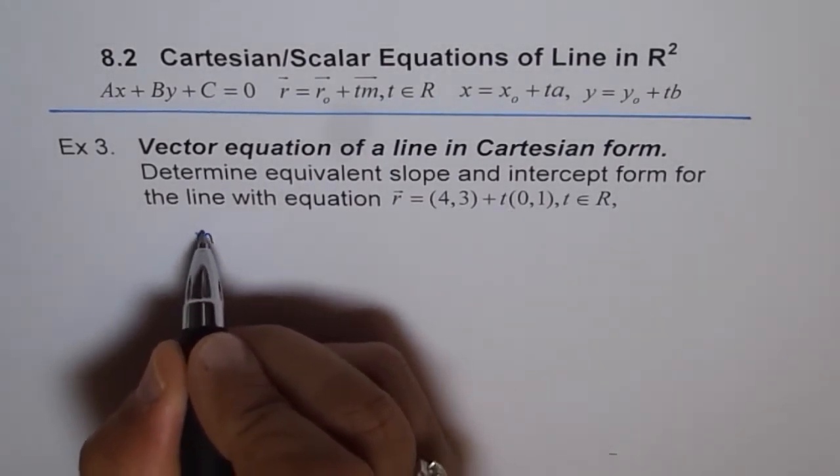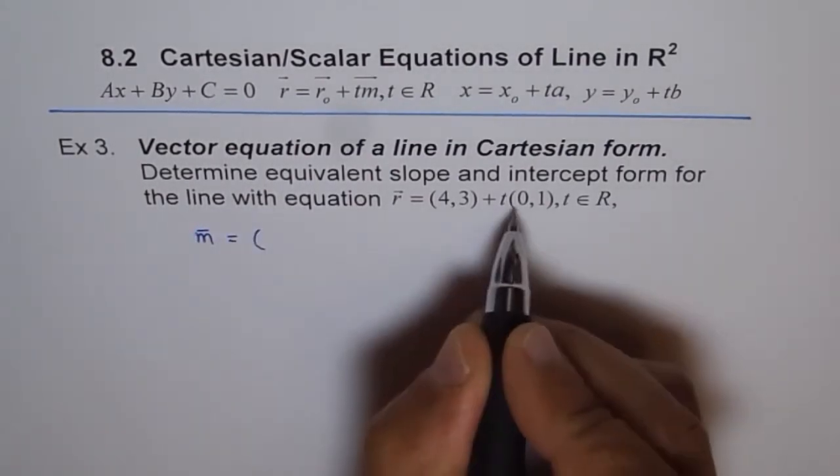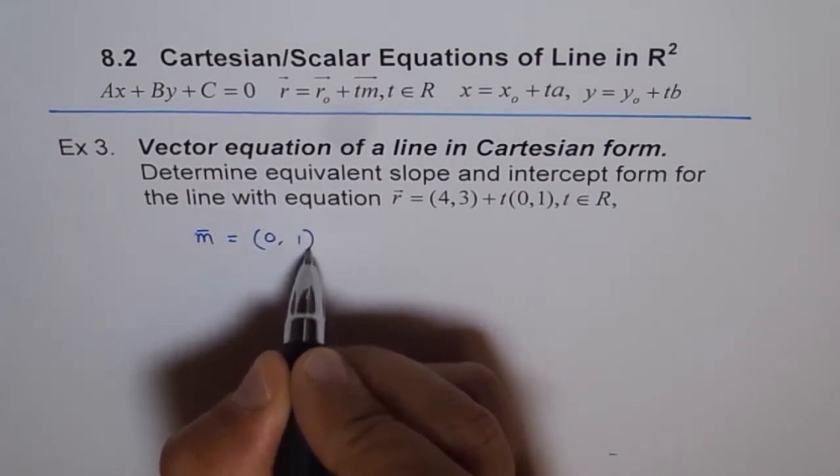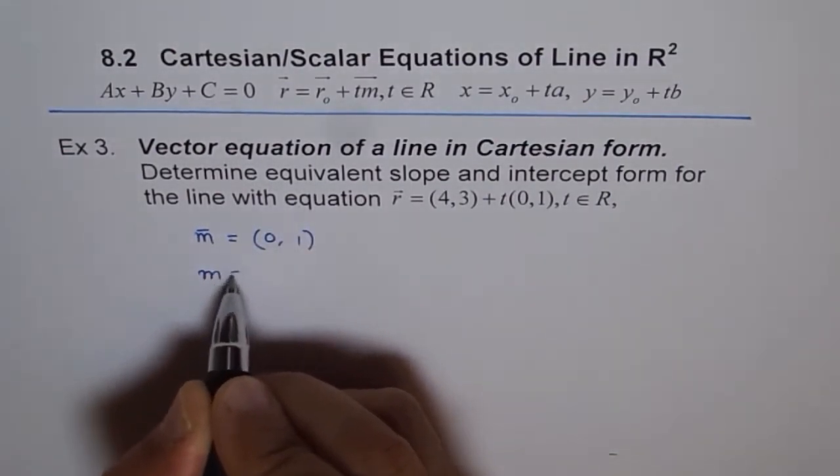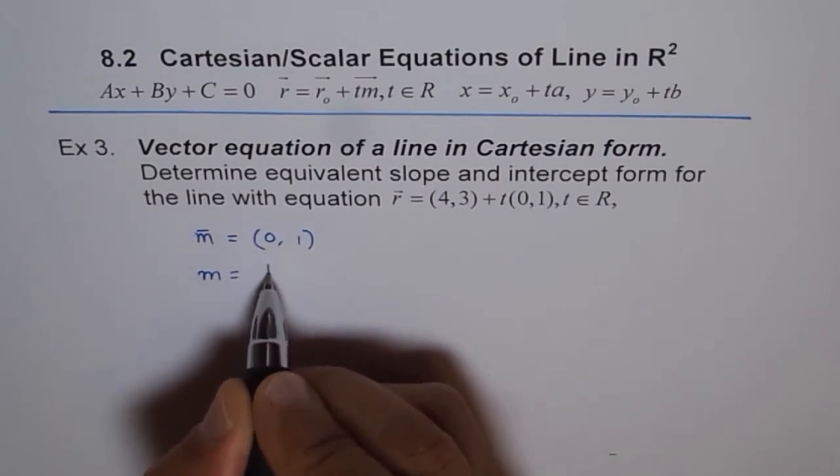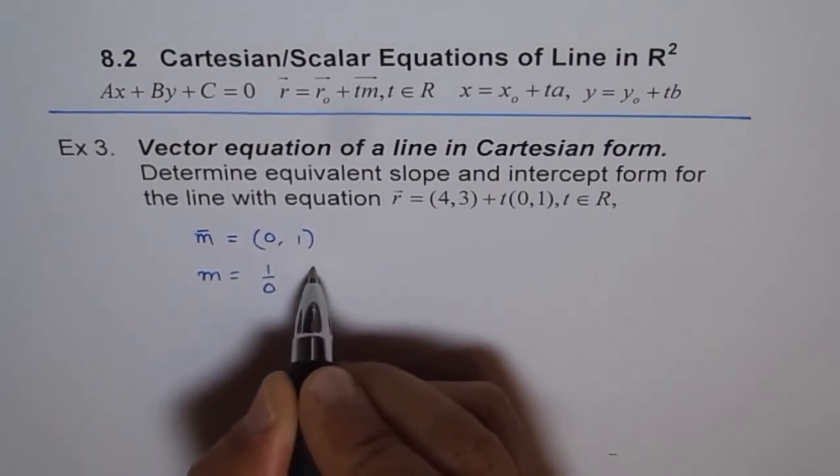The direction number m is (0,1), and from here, slope m for the line will be y-value over x-value: 1 over 0. But that is undefined.